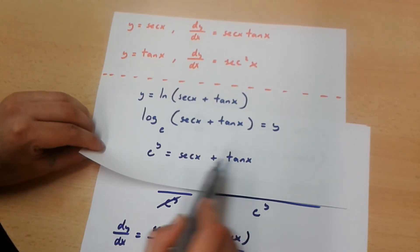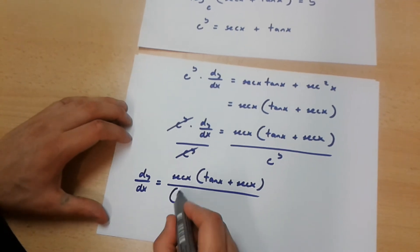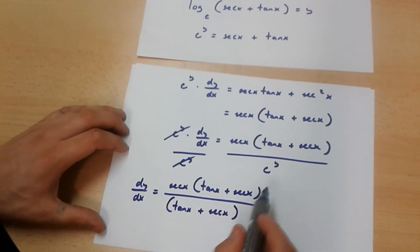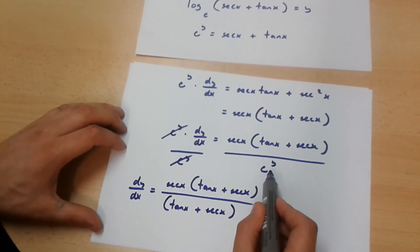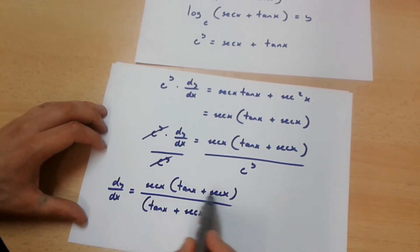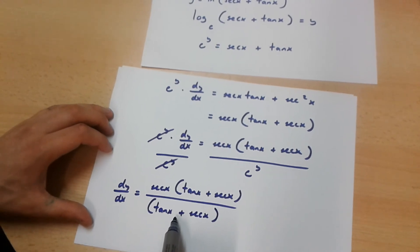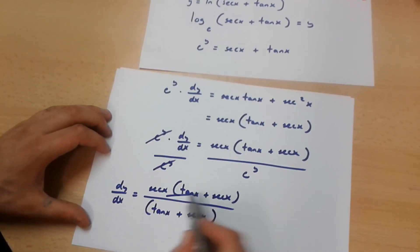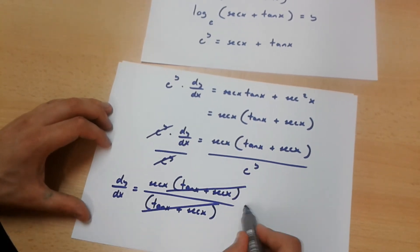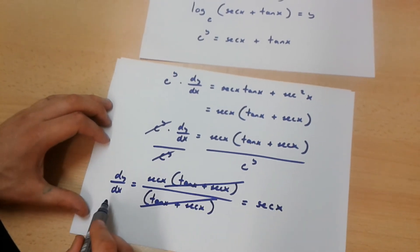And the numerator is tan x plus sec x. So let's put tan x plus sec x in the denominator because it is equal to e to the power of y. Now we have tan x plus sec x in the numerator and the same value in the denominator, so they cancel out. Therefore dy over dx is equal to sec x.